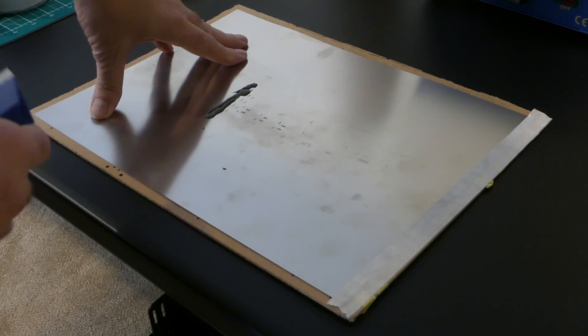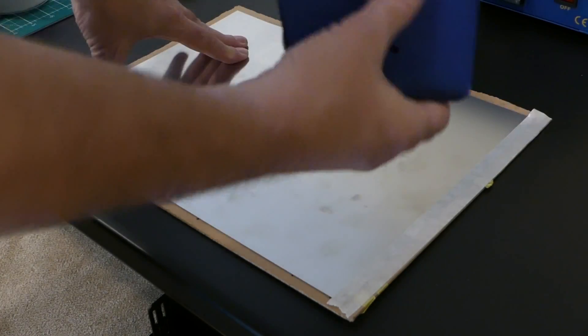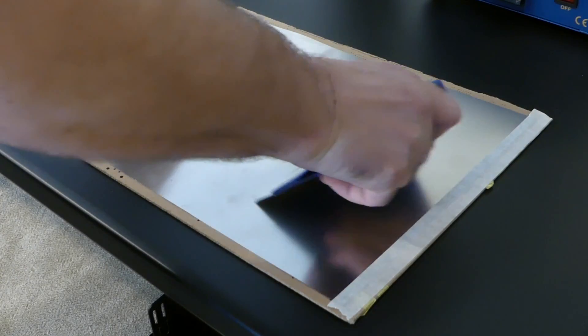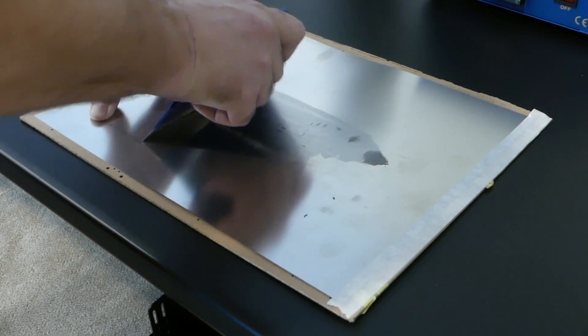So, what I'm going to do is I put my hand down to hold the stencil to the wood back so it doesn't slide, and I'm just going to firmly pull it across. And I'll do it one more time, just to make sure we're in there.